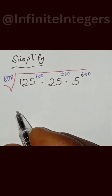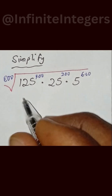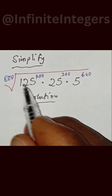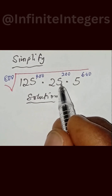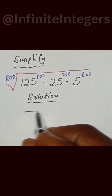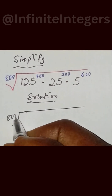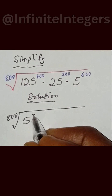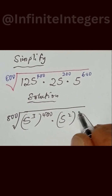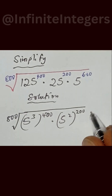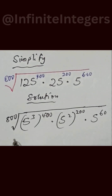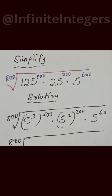Let's simplify this expression. We have the 800th root of 125 to the power of 400, multiplied by 25 to the power of 200, multiplied by 5 to the power of 600. The next step is to rewrite this as the 800th root of 5 to the power of 3, in brackets, to the power of 400, multiplied by 5 to the power of 2, to the power of 200, then multiplied by 5 to the power of 600.